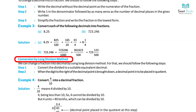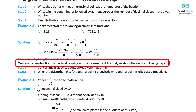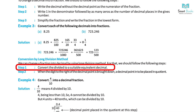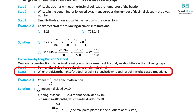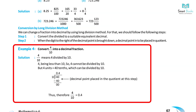Conversion by long division method: We can change a fraction into a decimal using the long division method. Step 1: Convert the dividend to a suitable equivalent decimal. Step 2: When the digit to the right of the decimal point is brought down, place a decimal point in the quotient. Example 4: Convert 4 upon 10 into a decimal fraction. Since 4 is less than 10, write 4 units as 40 tenths. Thus, 4 upon 10 equals 0.4.